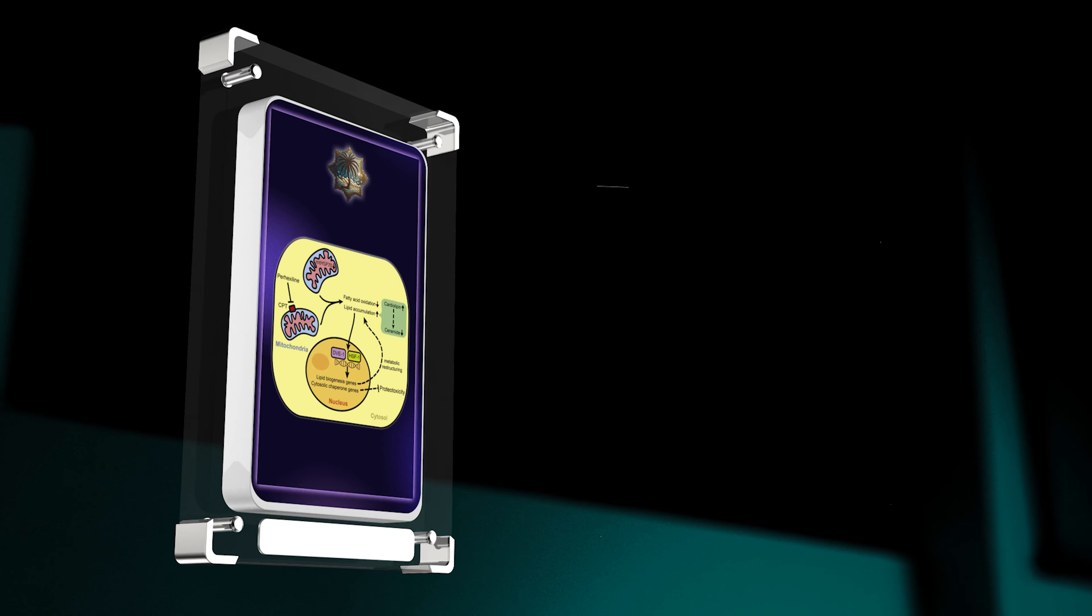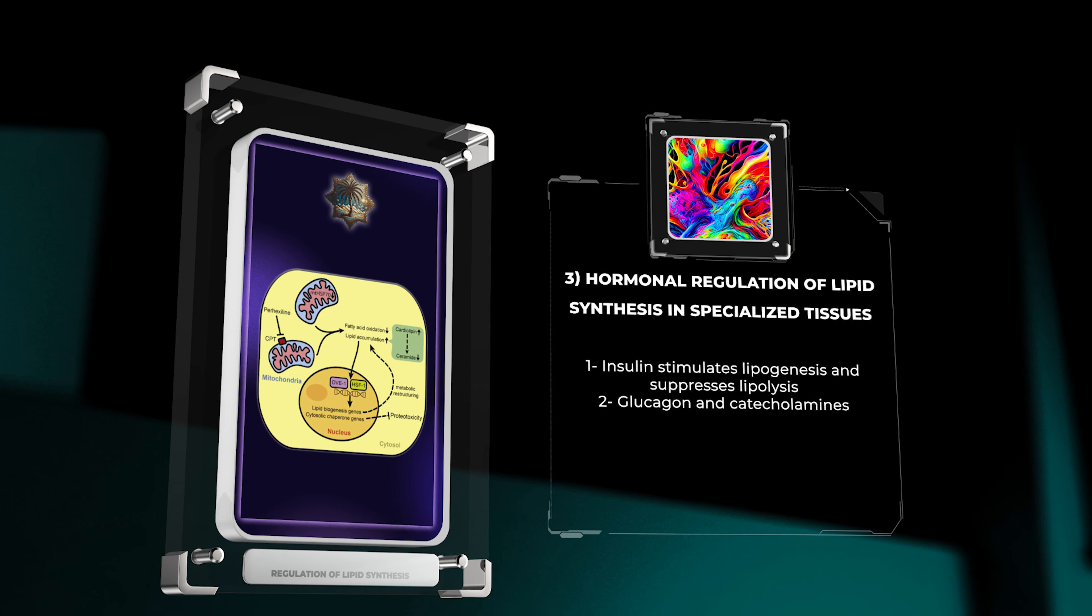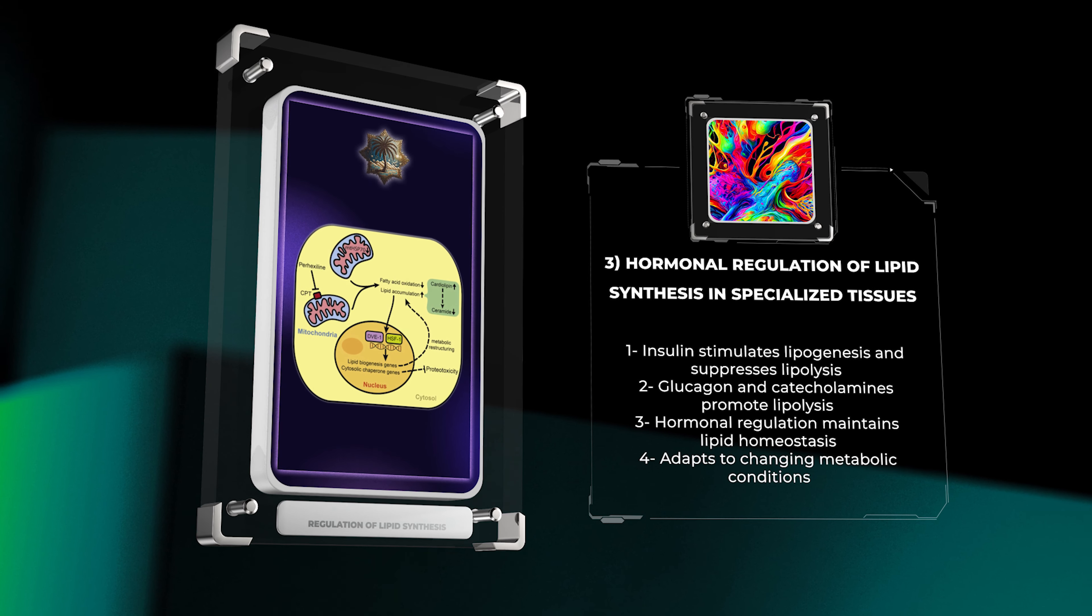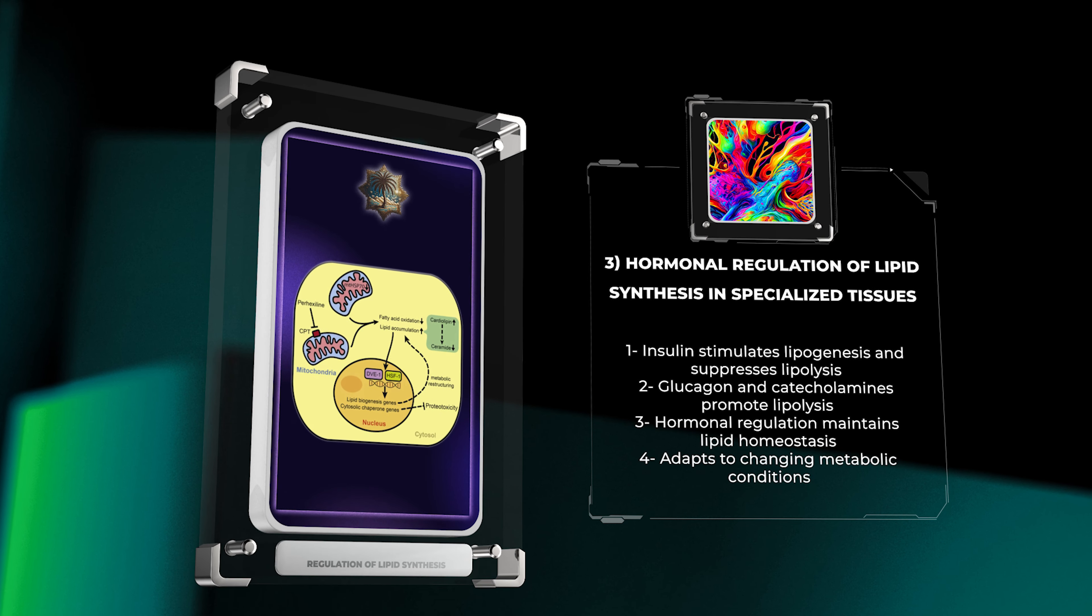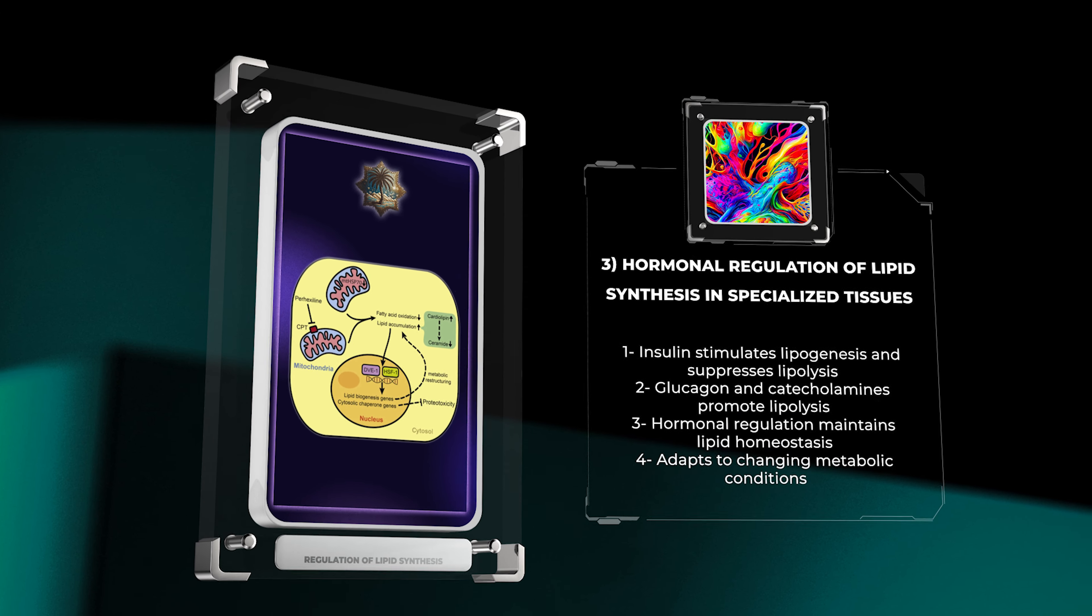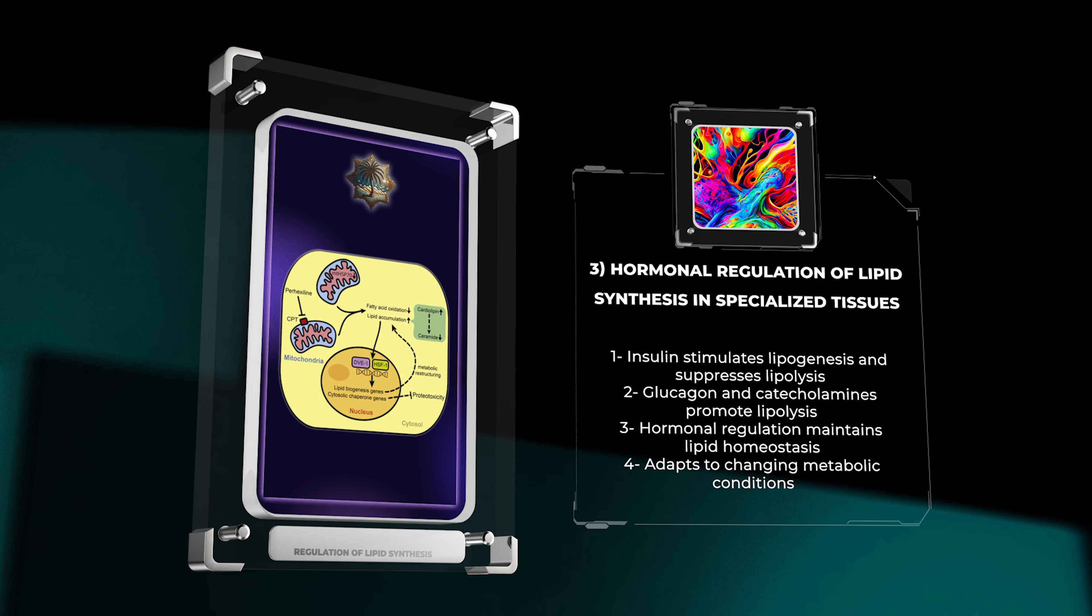Lipid synthesis is under tight hormonal control in specialized tissues, including the liver, adipose tissue, and mammary glands. Insulin, a hormone secreted by pancreatic beta cells, stimulates lipogenesis by activating key enzymes involved in fatty acid synthesis. Insulin also suppresses lipolysis, ensuring lipid storage during fed states.